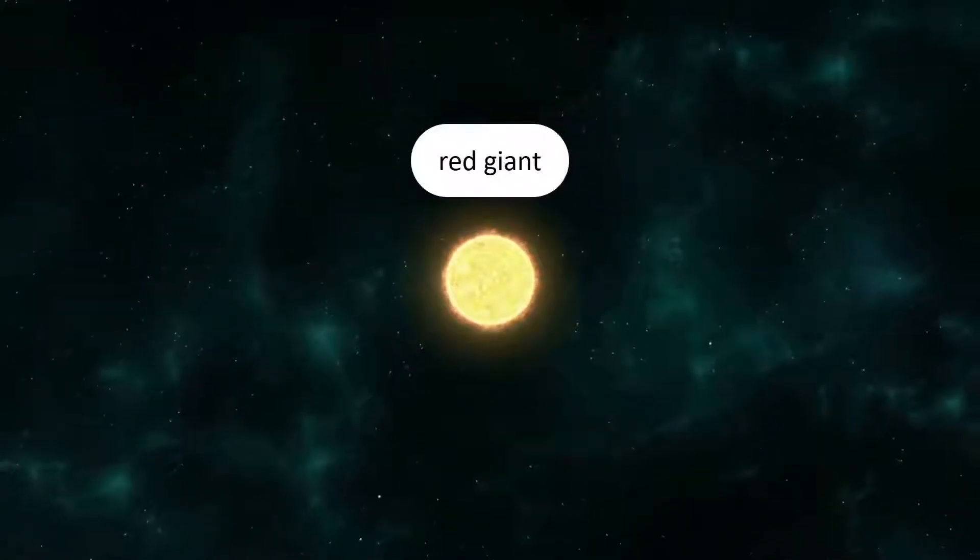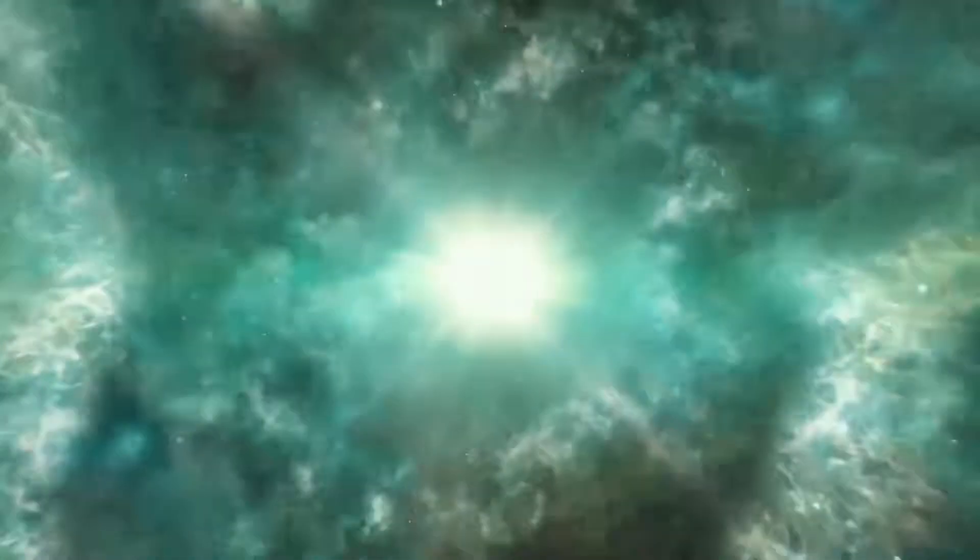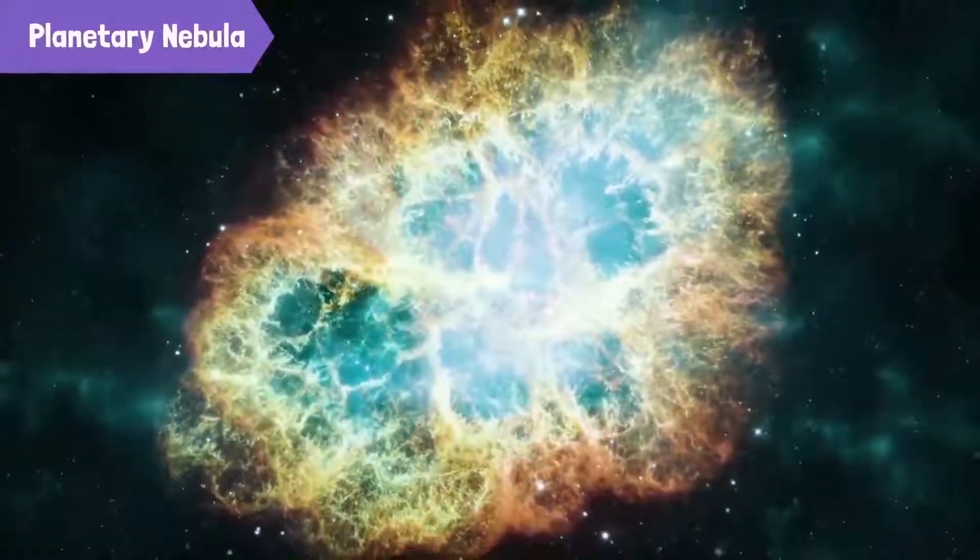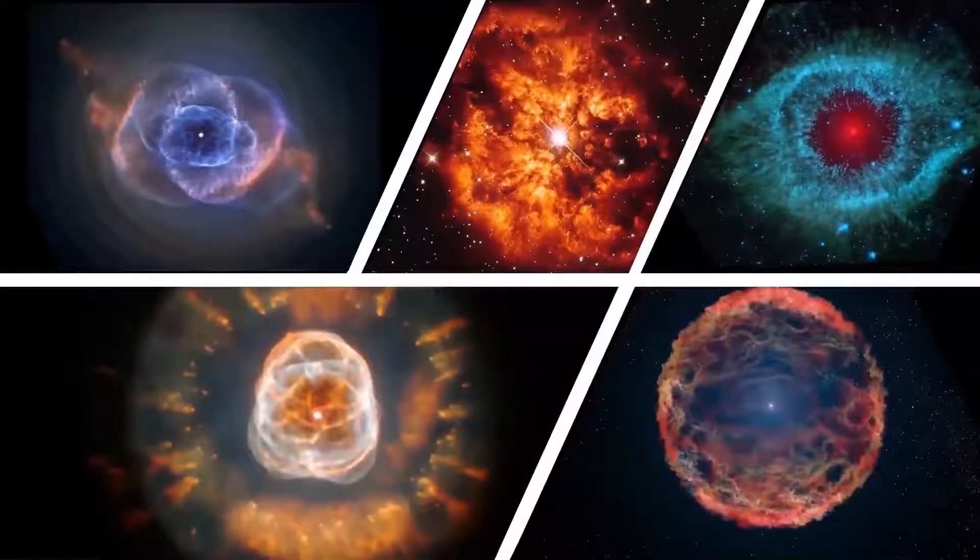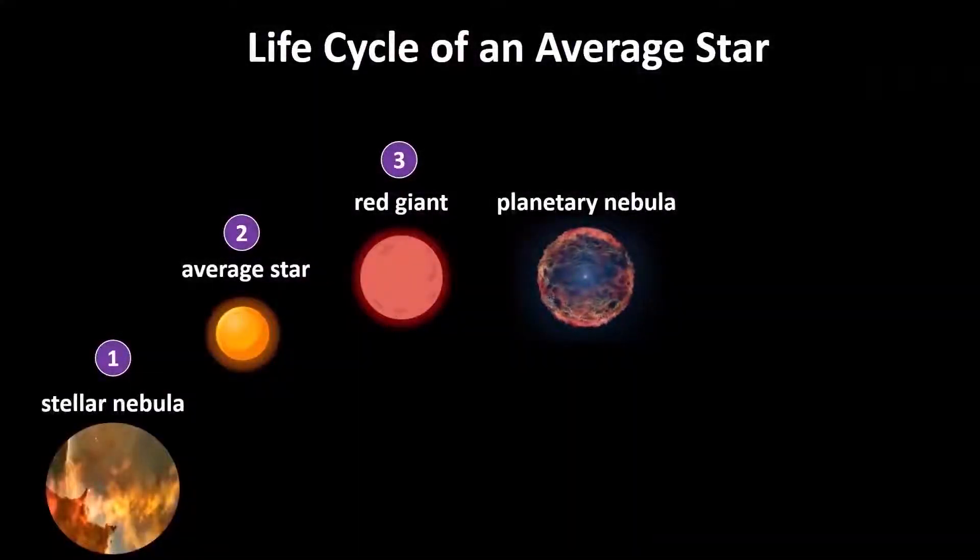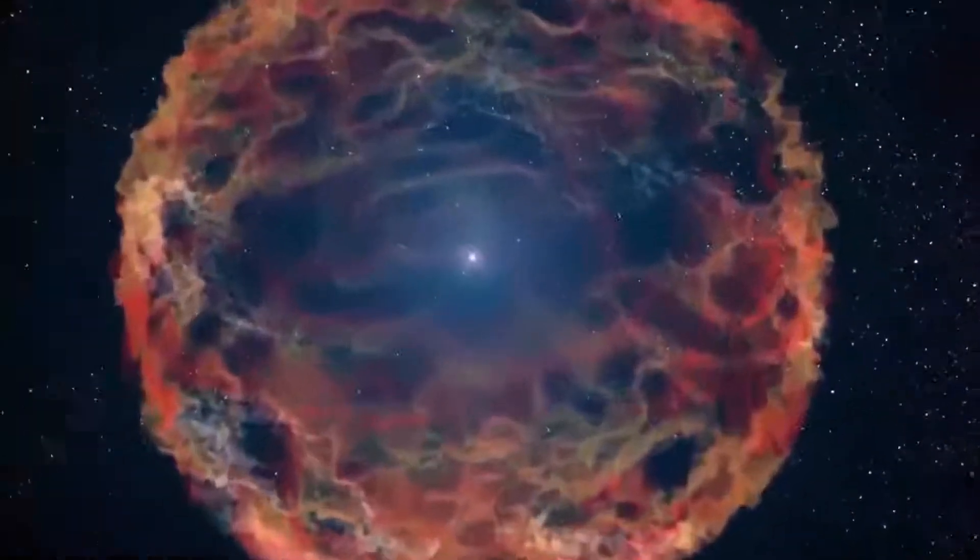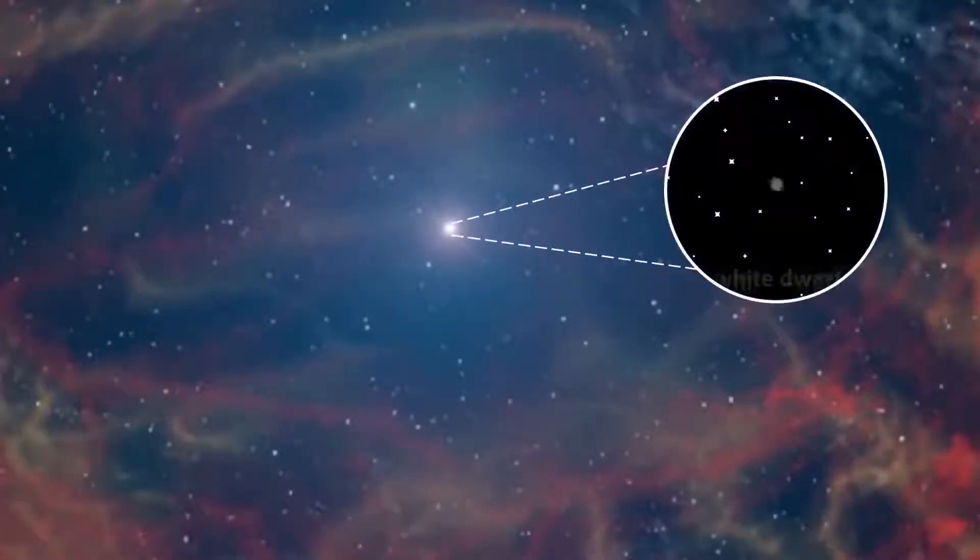The red giant will then cool down and begin to lose its mass. Its outer layers will begin to form a planetary nebula. Planetary nebulas are some of the most beautiful objects in the universe. Next, the planetary nebula will disperse, while its core will collapse inward and turn into a white dwarf.